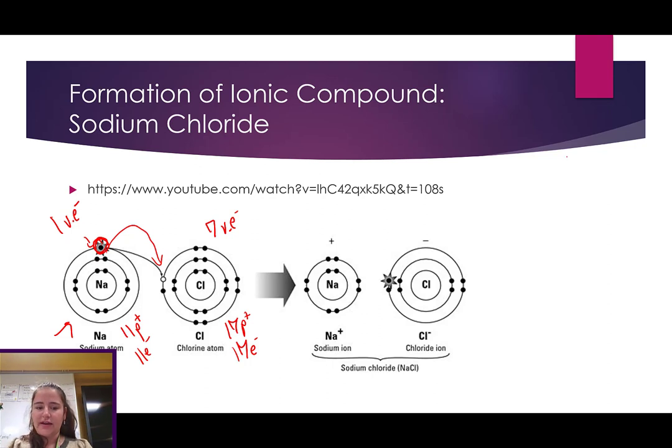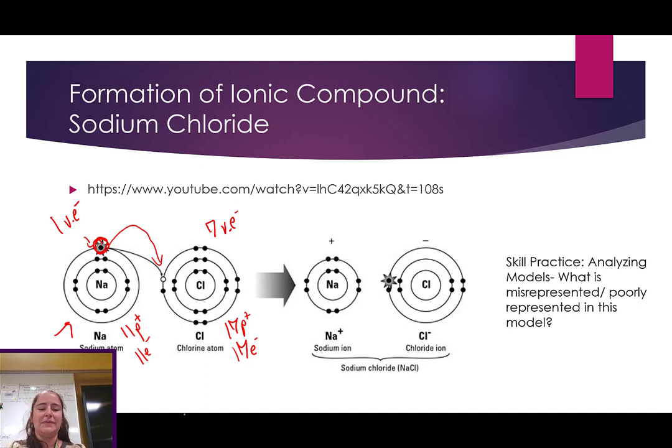And I really liked this image that I had picked up for this model of ionic compounds. But let's do a little skill practice right here, because it's not perfect. What is misrepresented or poorly represented in this model over here? Well, does chlorine lose or gain electrons when it forms an ion? Well, it's gaining. Nothing's happening to these electrons. And yet, for some reason, they're not in this final picture. So, let's go ahead and improve this model by adding in those electrons to chlorine so that all of its electrons are represented there. And then you can see that once they are ions, they both have that full outer shell of valence electrons. Therefore, they are stable.